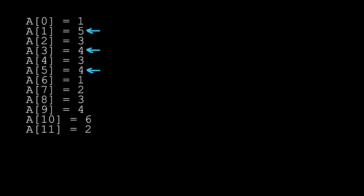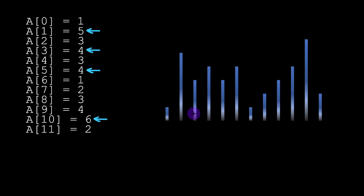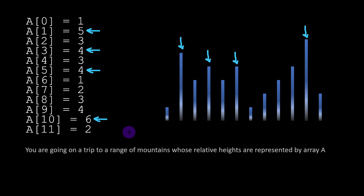Then we have number 4 again and number 6. So in total in this example we have four different peaks, and we can represent the terrain with the following graph to make it easier to imagine. These are our defined peaks, and the story says we are going on a trip to a range of mountains with relative heights represented in the given array, and the goal is to set flags during our trip.